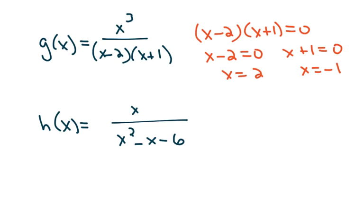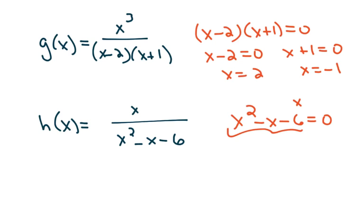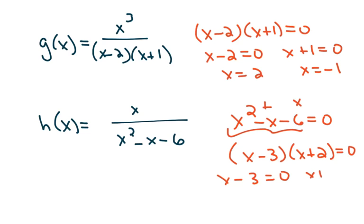Sometimes we have to do a little more work to get to the vertical asymptote. In h of x, when I set that quadratic equal to 0, the best way to go about solving it is to put it in factored form. The two numbers that multiply to give you negative 6 but add to give you negative 1 are negative 3 and positive 2. Now we set each of these equal to 0 using the zero product property to find the vertical asymptotes, which are at 3 and negative 2.